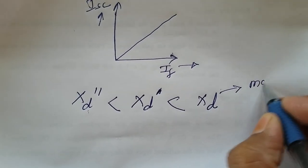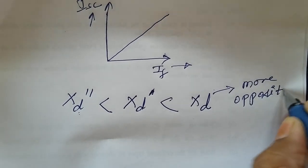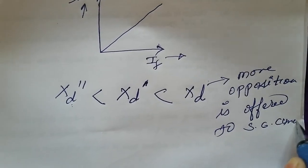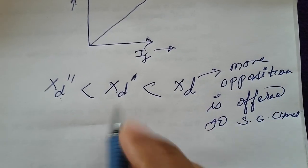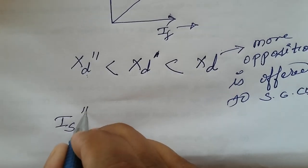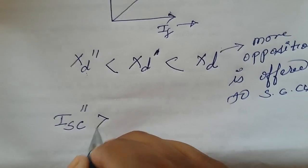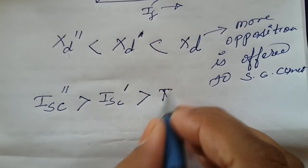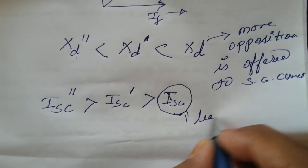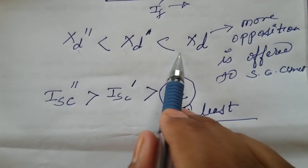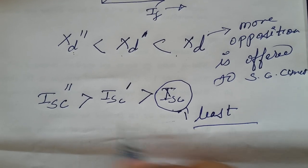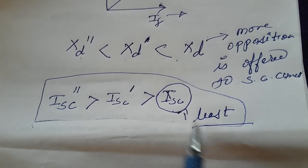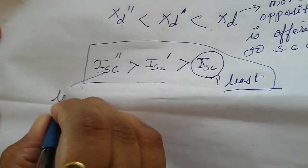During the steady state period, more opposition is offered to the short circuit current. Since the reactance is smallest during the sub-transient period, the short circuit current during sub-transient period will be the largest. In the transient period, the short circuit current is less than in sub-transient period, and in steady state, the short circuit current will be the least. The machine comes under a stable condition at this period. These are the impedances which the machine itself offers to resist the unstable or abnormal condition.